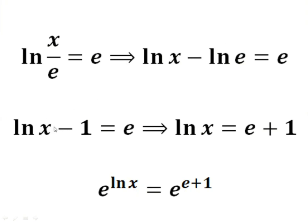Here ln e is 1, so ln x minus 1 equals to e, and this gives ln x equals to e plus 1.